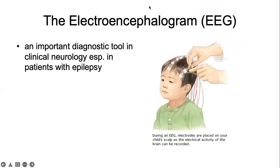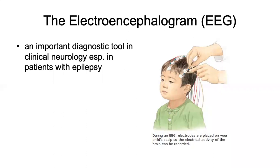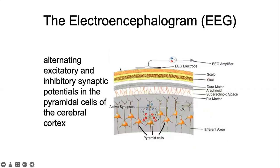The electroencephalogram or EEG is an important diagnostic tool in clinical neurology, especially in patients with epilepsy. Similarly to the ECG, electrodes are placed and detect the electrical activity of the brain, which is recorded and interpreted by a neurologist. The EEG electrode attached to the scalp perceives the alternating excitatory and inhibitory synaptic potentials in the pyramidal cells of your cerebral cortex, which is amplified by the EEG machine.